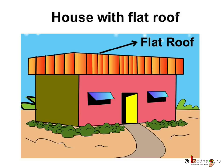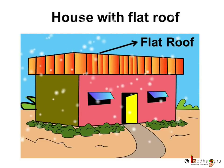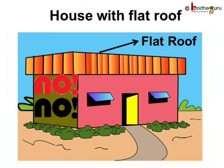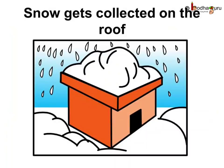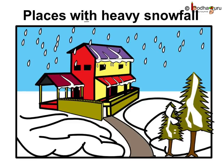Houses are made according to the climatic conditions of a particular place. Can we have houses with flat roofs in the places of heavy snowfall? No, the snow gets collected on the rooftop and it will be very difficult to remove the snow. Hence, the houses have sloping or slanting roofs so that the snow can slide off easily.